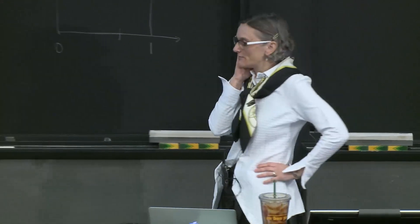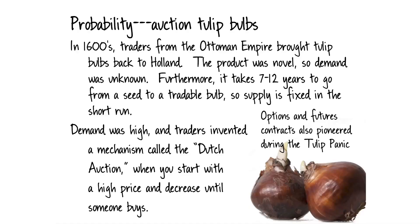For people interested in financial innovation, options and futures contracts were also pioneered during the Dutch tulip period to help deal with the interesting financial setting created by tulip bulbs. The Dutch tulip bubble lasted about a year and a half before a spectacular crash — which is why it was called the tulip panic.